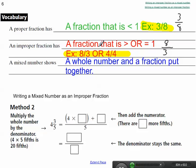A mixed number tells us a whole number and a fraction put together. So maybe I have 4 and 3 eighths.